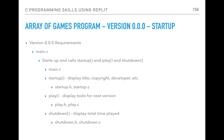For version 0, our startup, main.c will start everything up and call a startup, play, and shutdown function. We'll have separate files: startup.h and startup.c, which will display the title, copyright, and so forth. Then we'll have a play file where we actually do the playing, and a shutdown that might display how long you played the game.